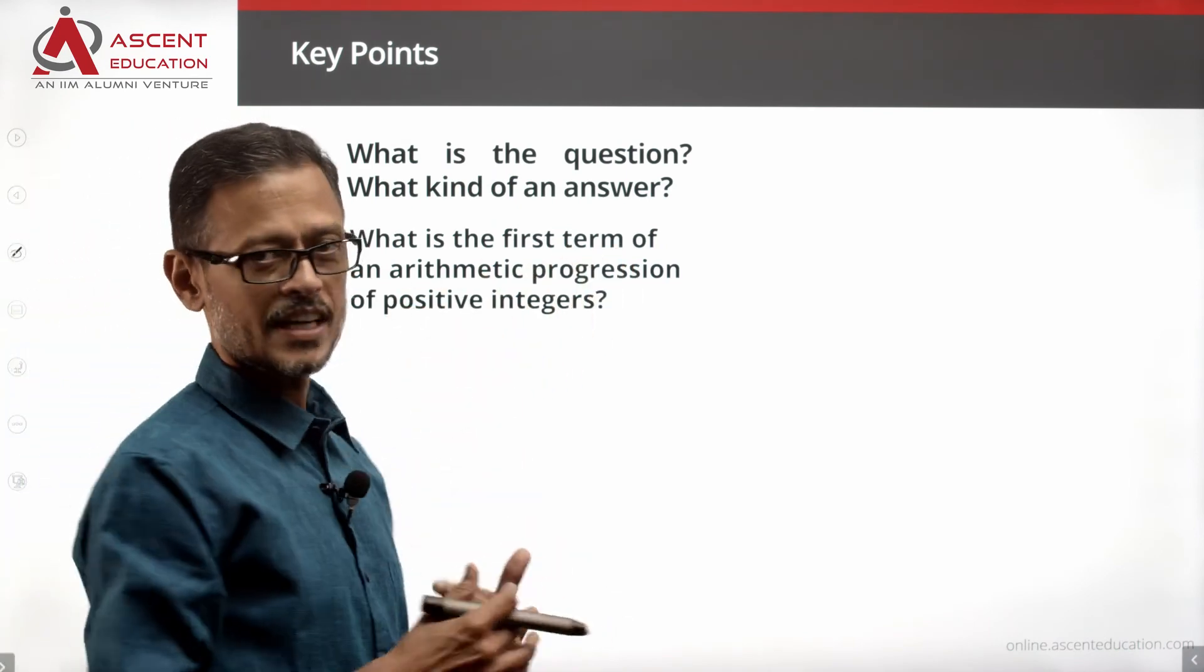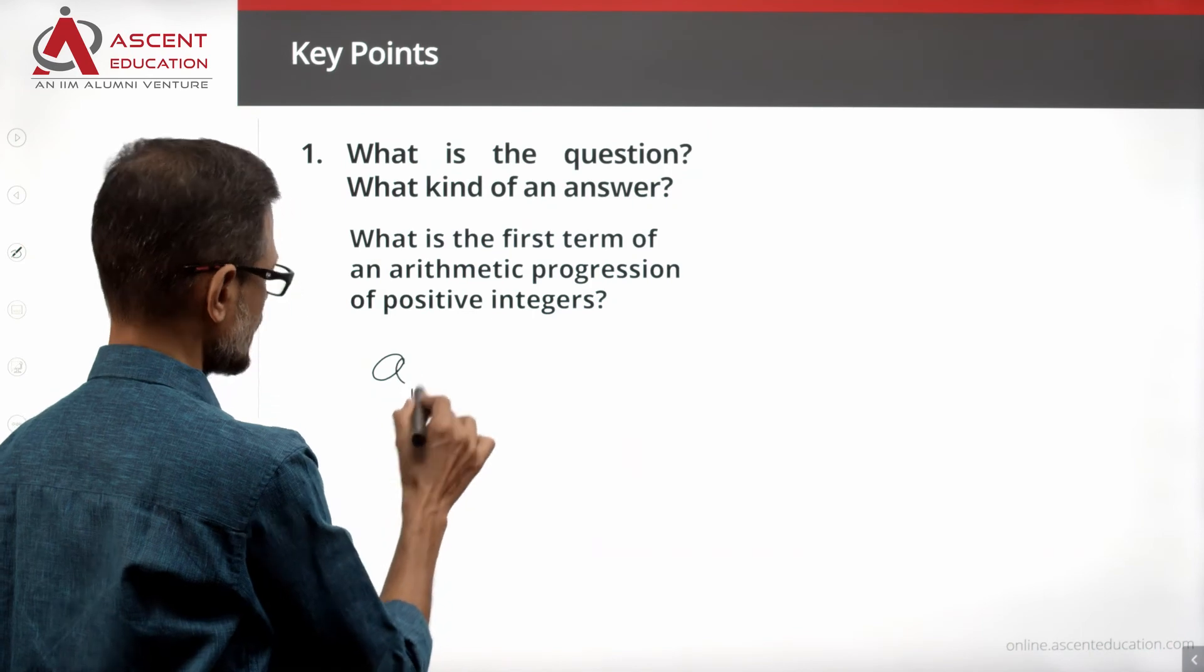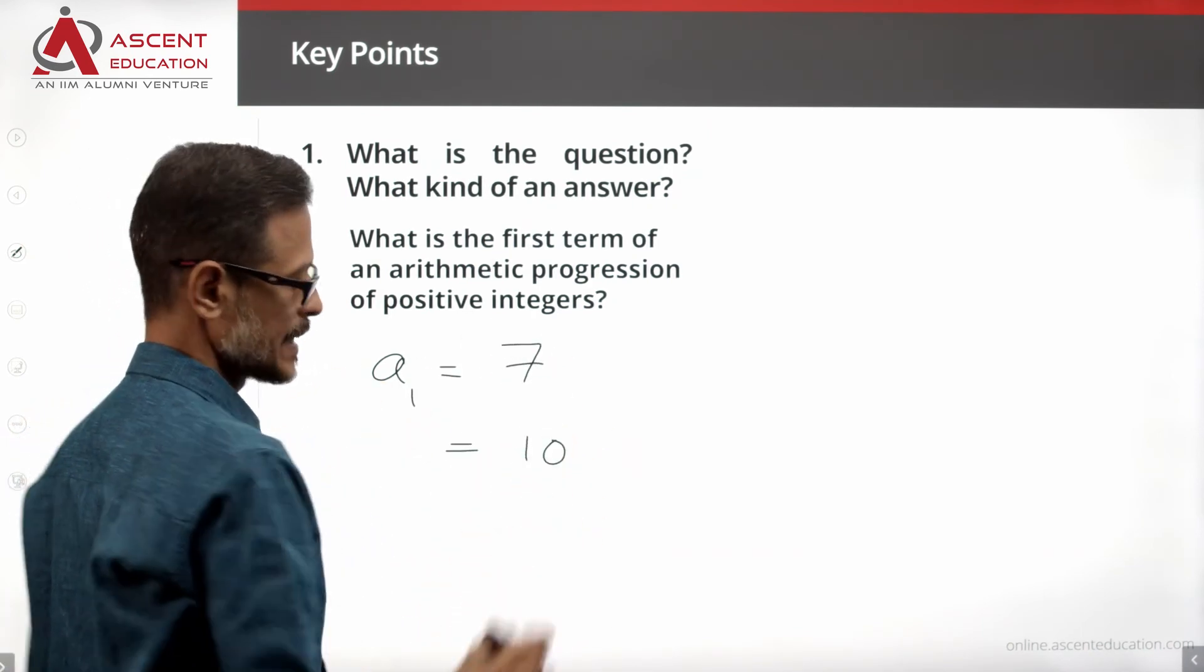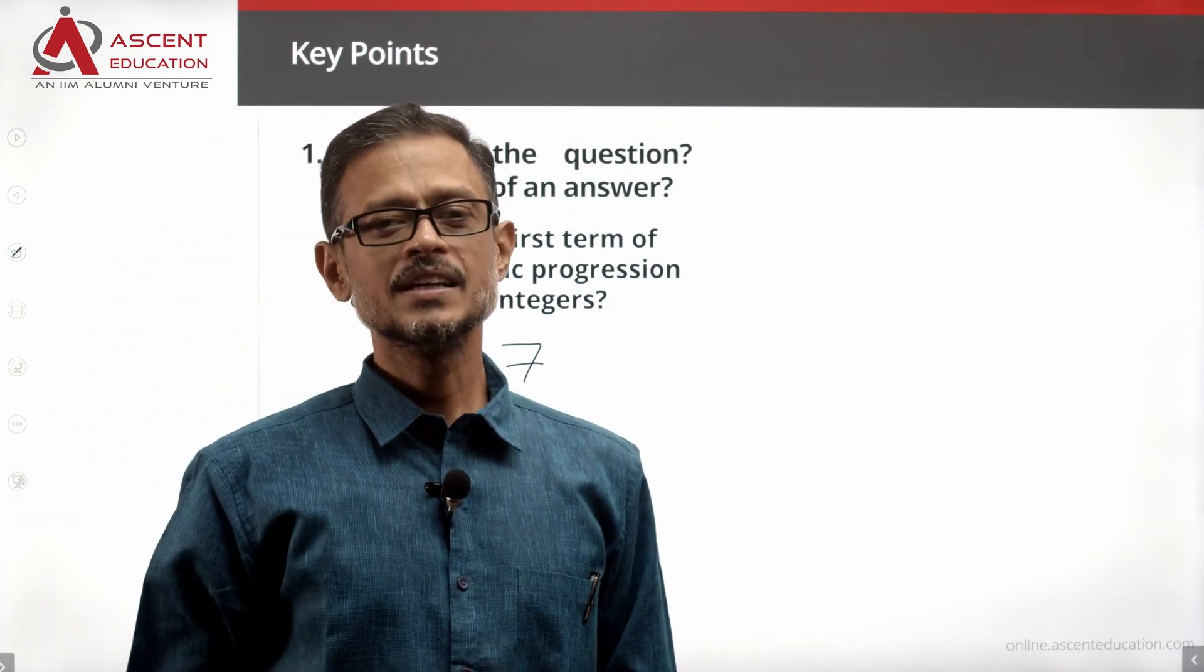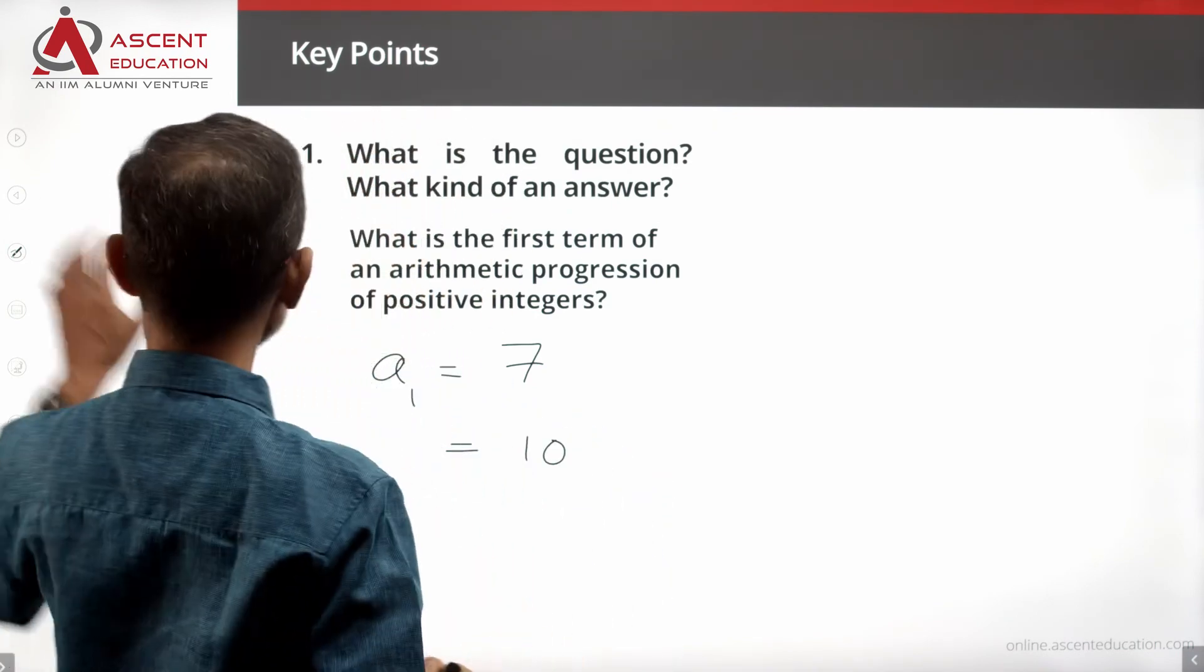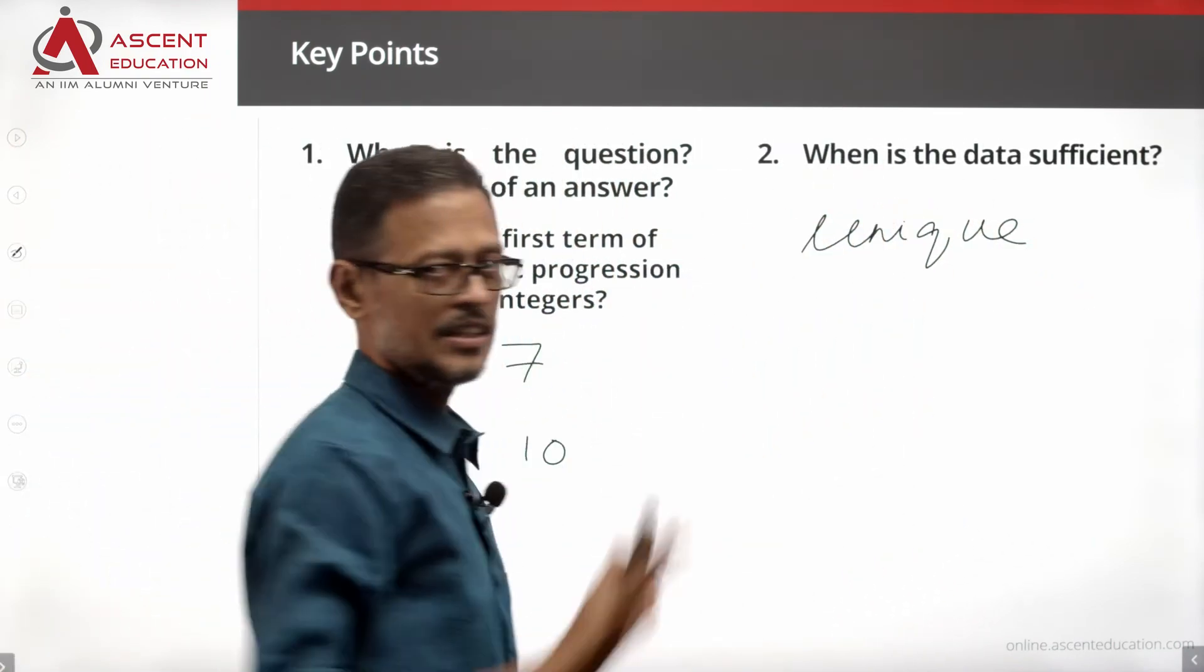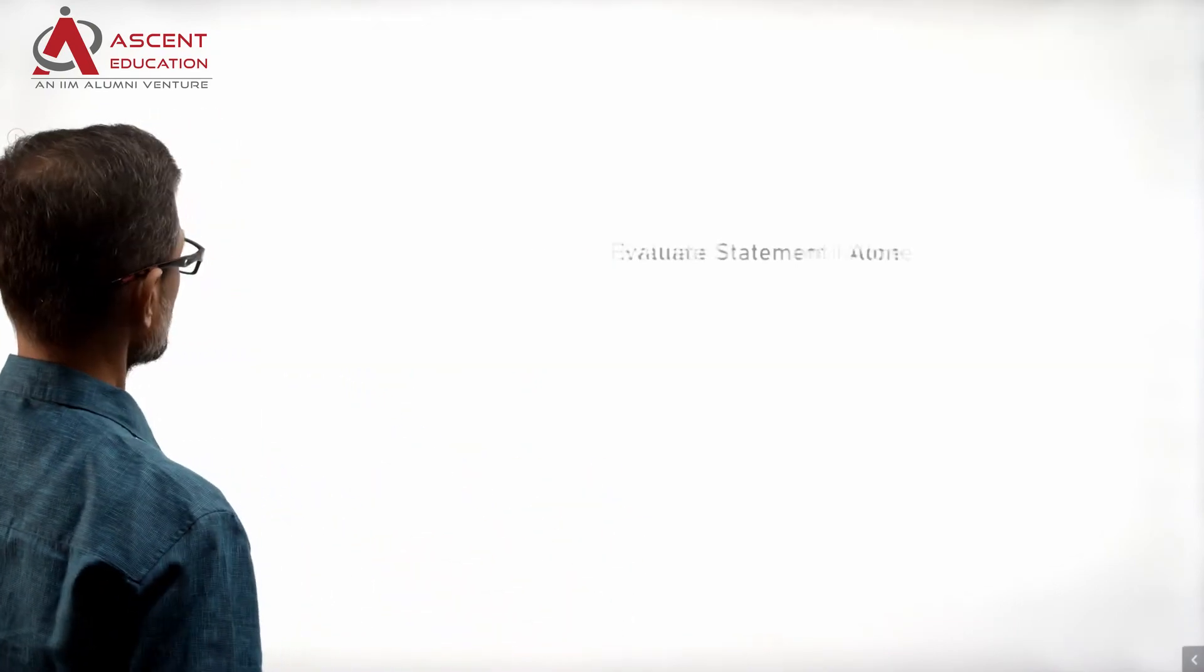What is the first term of this arithmetic progression of positive integers? So we will call the first term as A1, equal to 7 or the first term is equal to 10. If you are able to come up with one unique value for the first term, then the data is sufficient. Data is sufficient when we have a unique value. Start by evaluating statement 1.